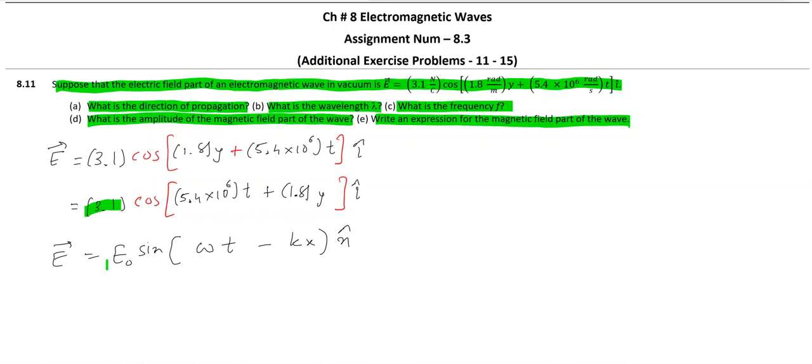First, that E₀ is readily available. Second, we have omega given. Third, k is also given. And we also have direction available.